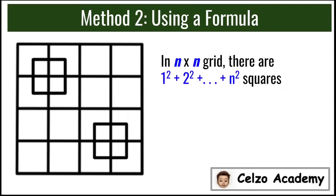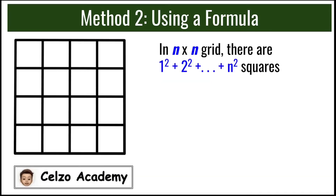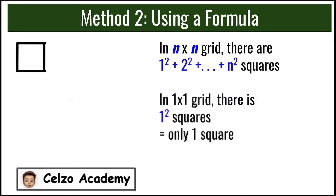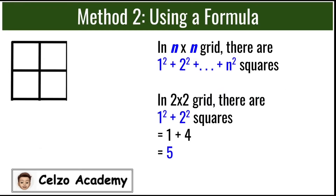Now I will show you how to derive the formula to answer this question. If there is an n by n grid, there are 1² plus 2² plus up to n² squares. This means that if we have a 1x1 grid, there is only 1 square, which is 1 to the second power. If we have a 2x2 grid, using the formula, we will have 1² plus 2², so we have 5 squares total.